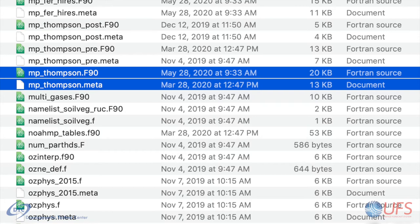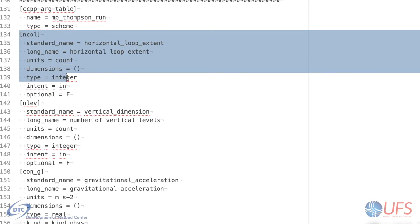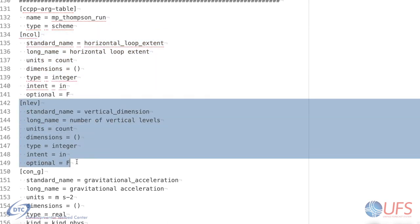The scheme's metadata is placed into a separate file with the same root name, but with a .meta extension. This file uses a relaxed config file format with defined sections for each subroutine in the Fortran code with a CCPP compliant interface. Each section begins with a name of the subroutine and a type that describes what kind of entity the metadata is describing, in this case, a scheme. Afterward, all variables that are part of a subroutine's argument list are included, with attributes for each variable following.